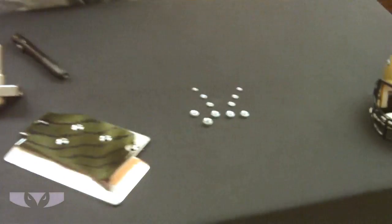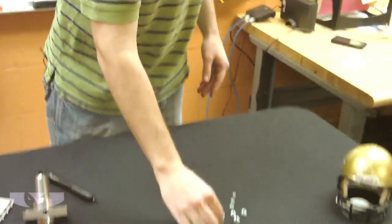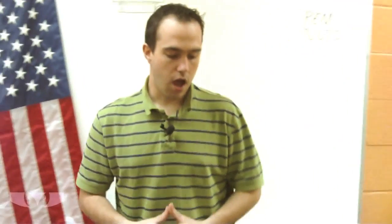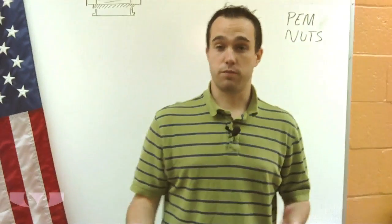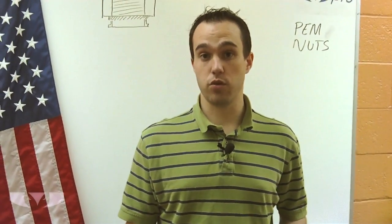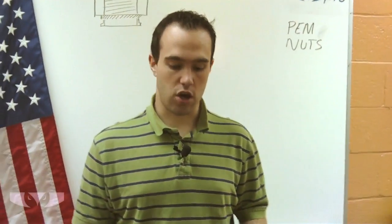PEM nuts are these little things right here. What they do is they provide a threaded surface for which material can grab onto. We've talked previously about what a tapped hole is where you put threads in it. So if you put a machine screw in the tapped hole, it'll have threads to lock onto.